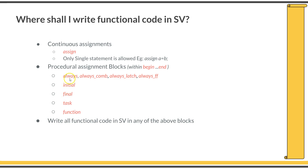In order to add multiple statements into these blocks, you need to use a begin-end construct. Typically, an always block will look like: always begin, followed by a number of statements, then end. Similarly, an initial block: initial begin, followed by statements, then end. The always block is executed continuously during simulation — it's essentially an infinite loop. The initial block is evaluated only at the very beginning of simulation, and it is from the initial block where you start your test bench functionalities.